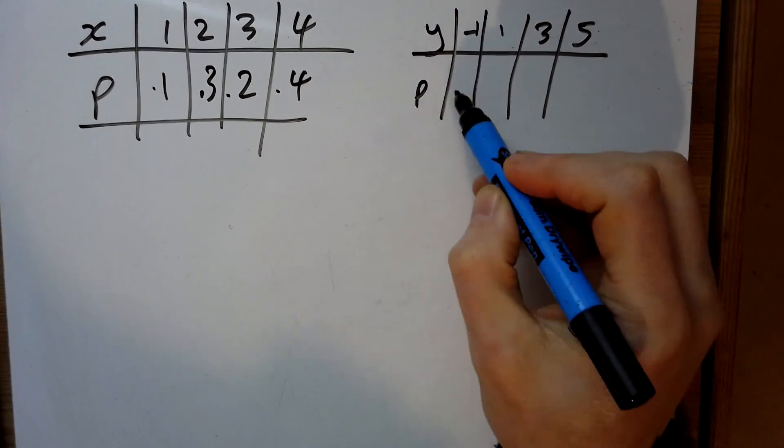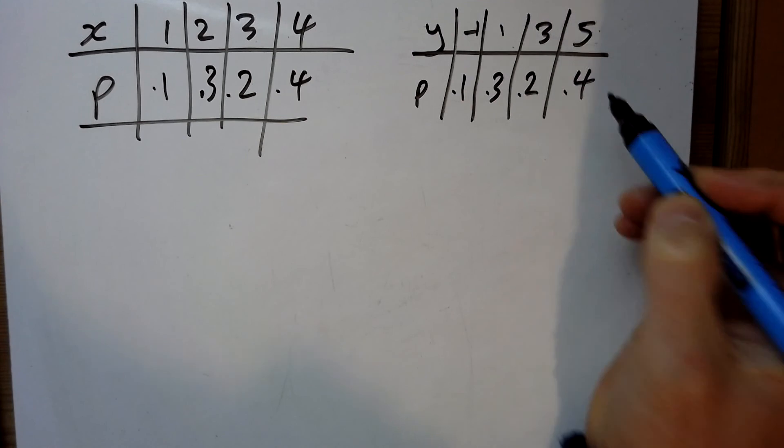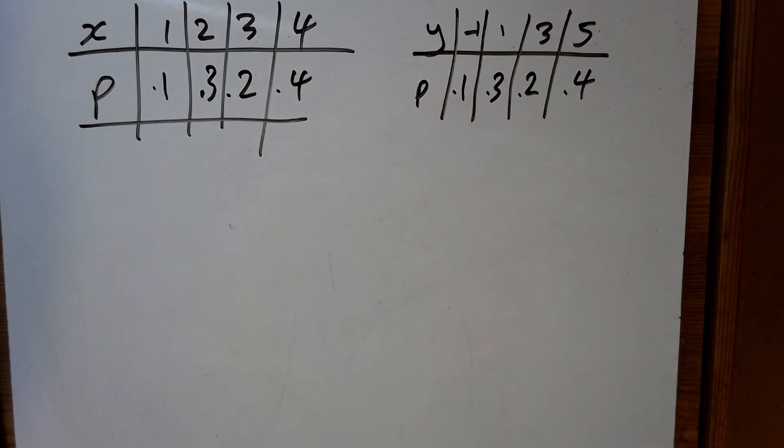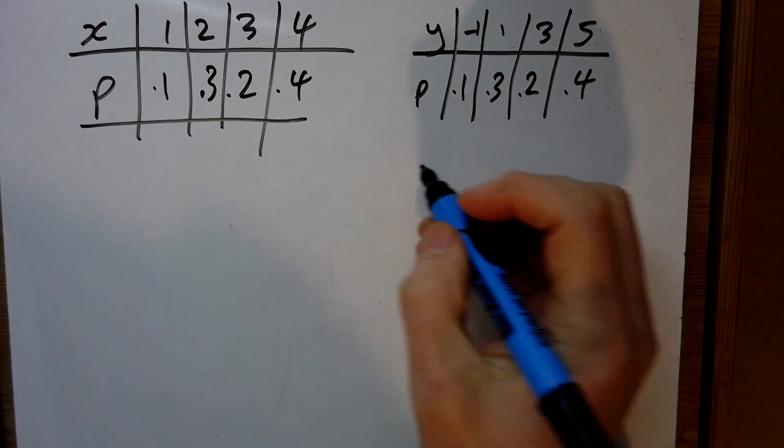The probabilities are unchanged, so that's 0.1 there, 0.3 there, 0.2 there and 0.4 there. And what are we asked to do? We're asked to find out the property distribution, now we're going to find out the expected value of y.